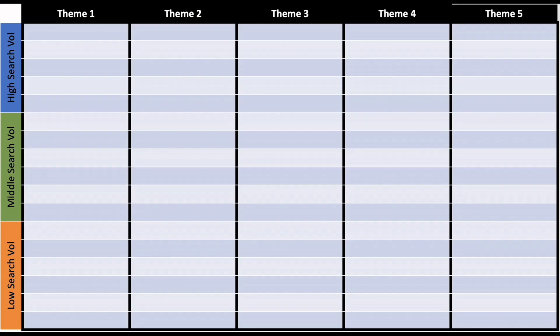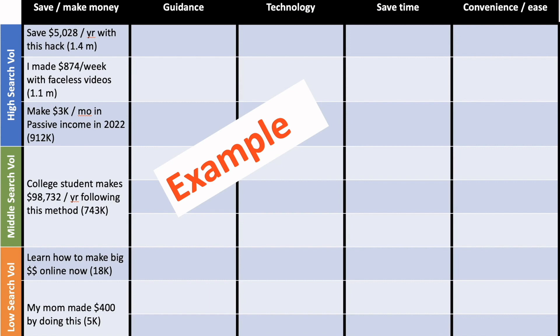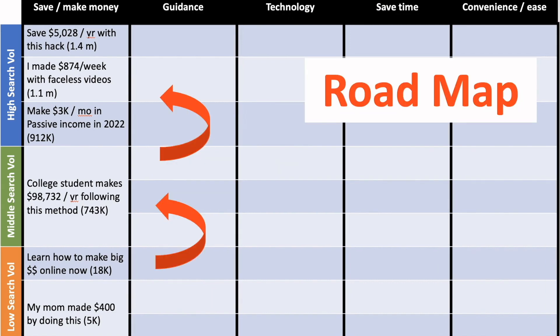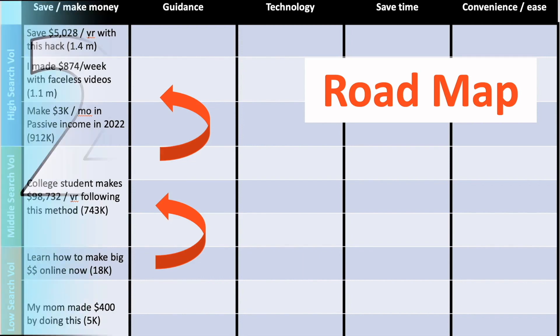We've got our list. Now we're going to make a chart like this one. The topics at the bottom are search phrases with low levels of search volume, and those higher up have a higher level of search volume. This is what a completed chart looks like — it gives you a roadmap showing you which search phrases to make videos about, starting from the bottom and moving your way up as the channel grows.